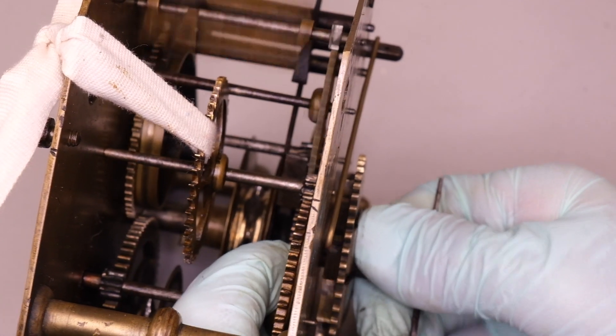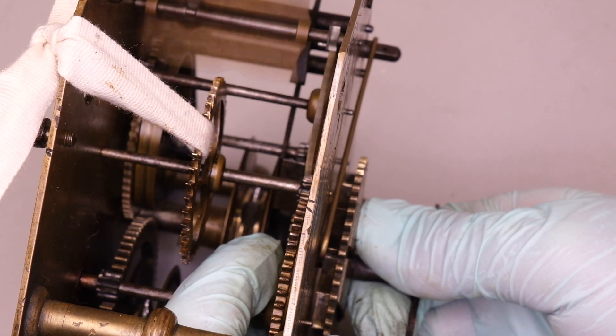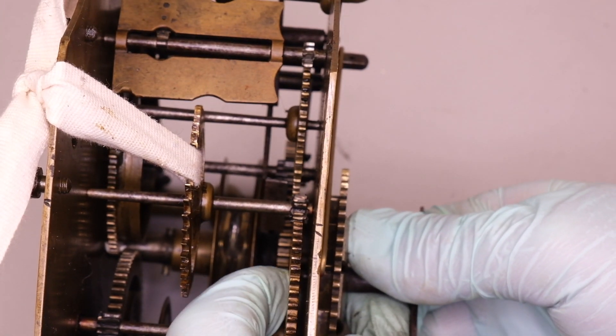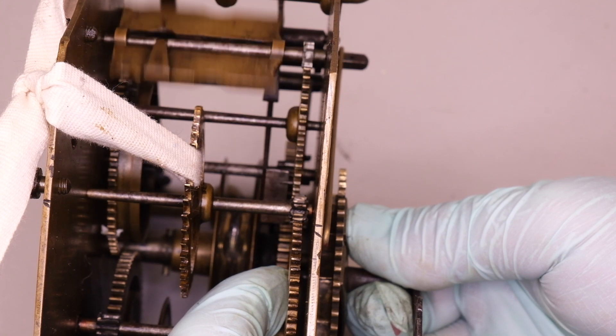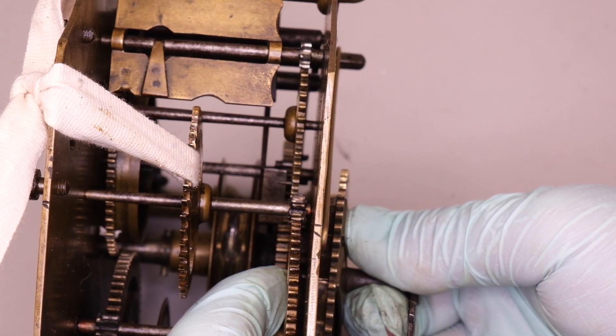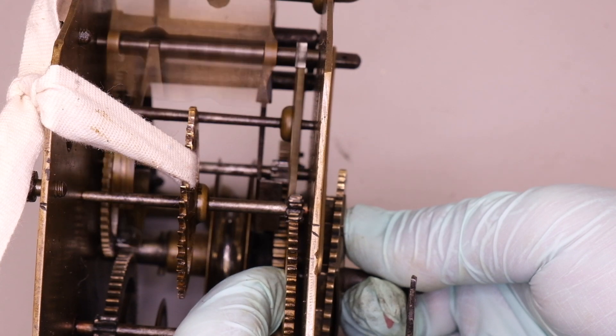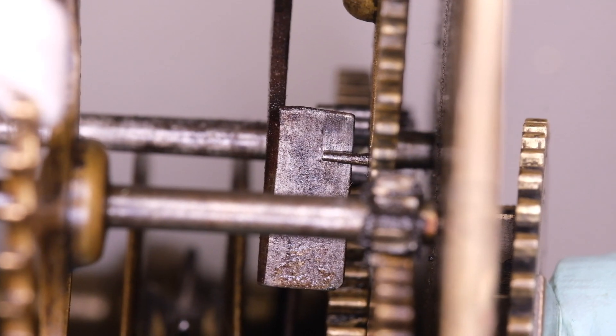So a little adjustment and try it again. This is all done pretty quickly as you can see, just driving the striking train with my finger, and I can now see that the striking train releases and runs to warning.